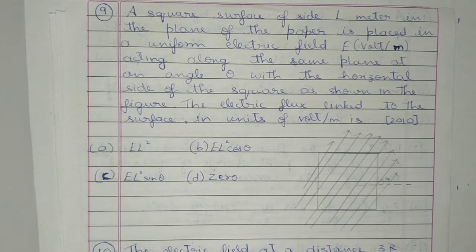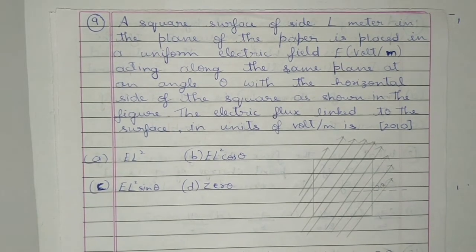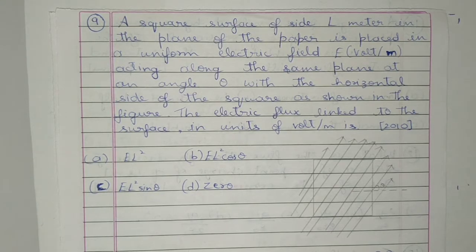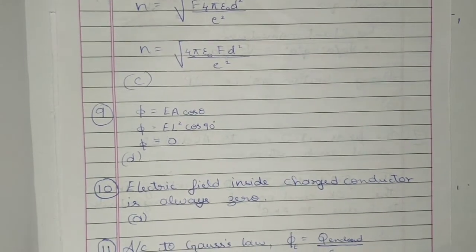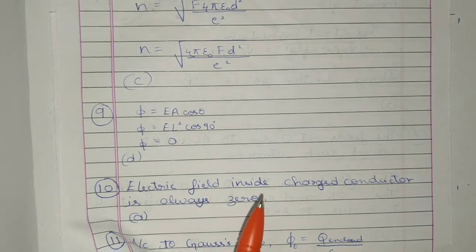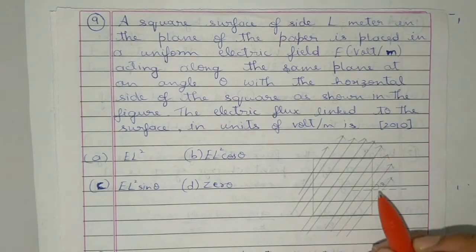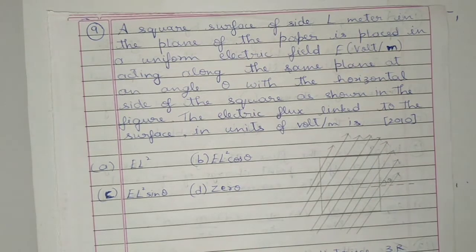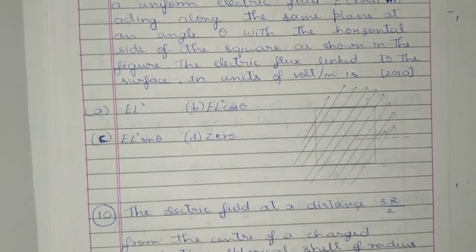Question 9: A square surface of side L meters in the plane of the paper is placed in a uniform electric field acting along the same plane at an angle θ with the horizontal side of the square as shown in the figure. The electric flux linked to the surface is — here again, the angle between the electric field and the area vector is 90 degrees, so therefore the flux is 0. This angle θ is not between electric field and area vector. It is option D.